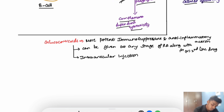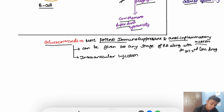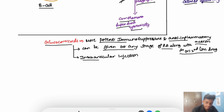Glucocorticoids have potent immunosuppressant and anti-inflammatory action. They can be given at any stage of rheumatoid arthritis along with first-line and second-line drugs. They are given through intra-articular injection.